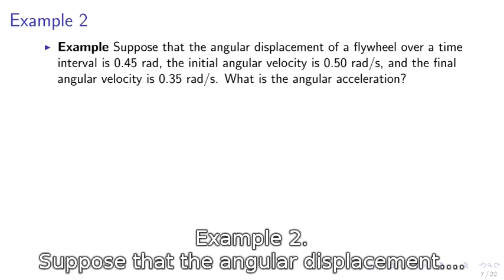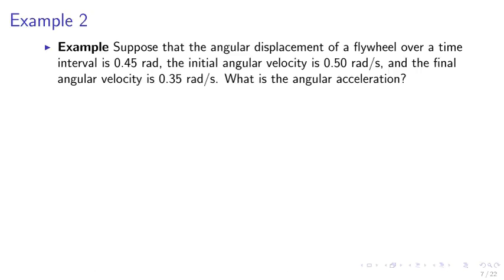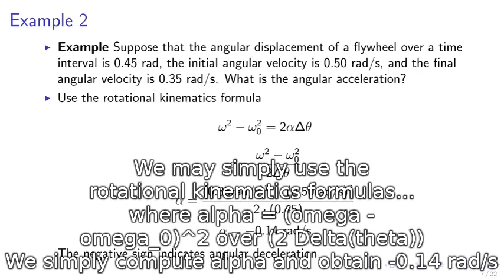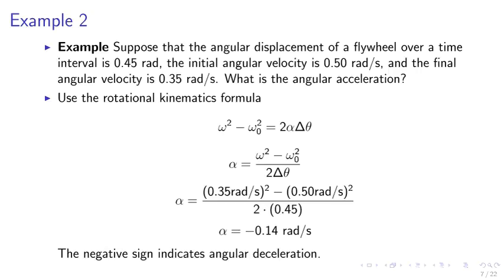Example 2. Suppose that the angular displacement of a flywheel over a time interval is 0.45 radians, the initial angular velocity is 0.50 radians per second, and the final angular velocity is 0.35 rad per second. What is the angular acceleration? We use the rotational kinematics formula: omega squared minus omega-naught squared equals 2 alpha delta theta, so alpha equals (omega squared minus omega-naught squared) over (2 delta theta). With delta theta equals 0.45 radians, we obtain alpha equals negative 0.14 rad per second squared, where the negative sign indicates angular deceleration.